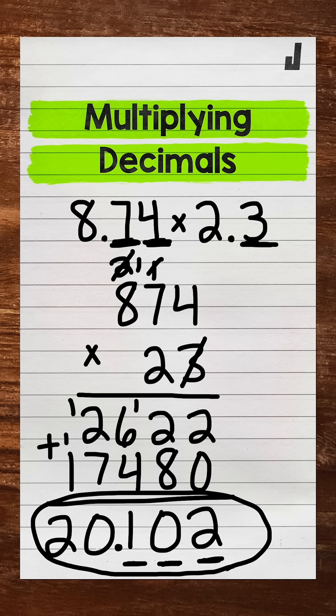So there you have it. There's how to multiply decimals. Step 1, remove any decimals. Step 2, multiply. And then step 3, place the decimal in the answer.